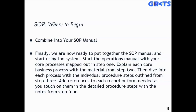Finally, when you're ready, compile everything together — the SOP manual — and start using the system. Start the operations manual with your core processes mapped out from Step 1. Explain each core business process with material from Step 2. Then dive into each process with individual procedure steps from Step 3. Add references to each record or form as applicable in the detailed procedure steps from Step 4. You don't want to start writing procedures without understanding what your end result is. The process should be formalized, methodical, and systematic — proactive, not reactive.